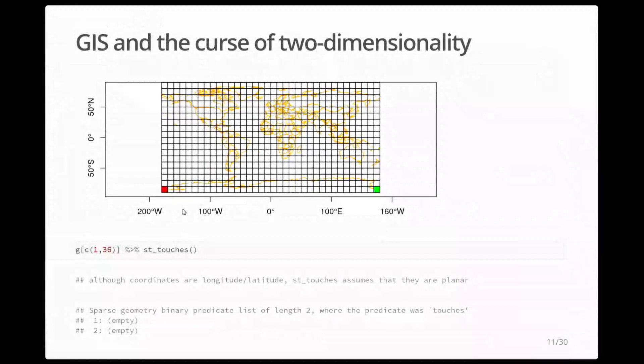There is what I call the 'curse of two-dimensionality': the traditional GIS view, inherited from almost 40 years of GIS, takes a flat-square view of the world for global data. For example, I made a 10-by-10 degree grid over the globe and asked: does this red cell touch this green cell? The answer comes back: no, they touch nothing. Of course they do touch each other, but in this flat view they don't.